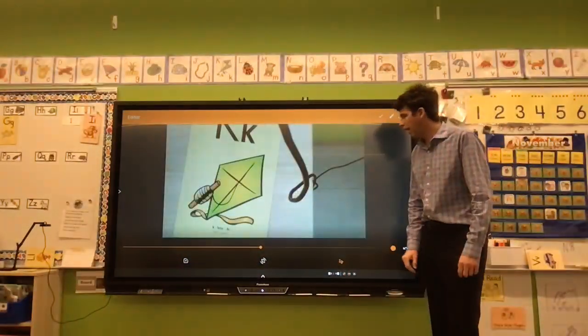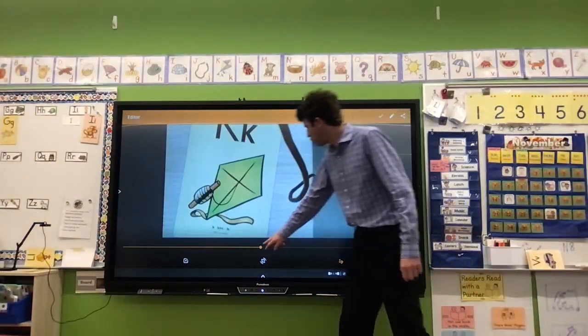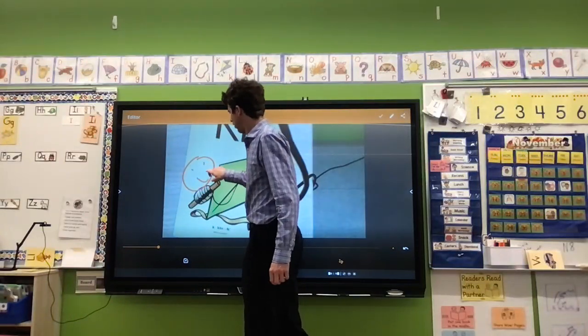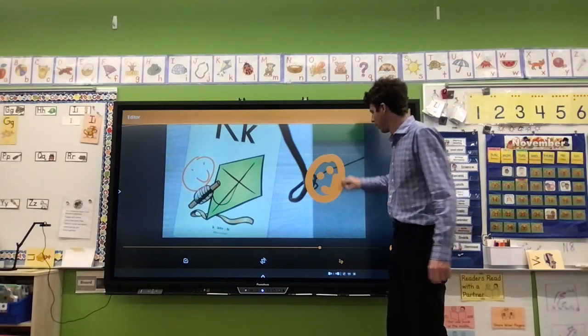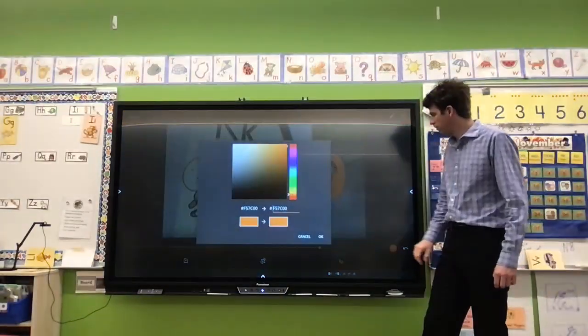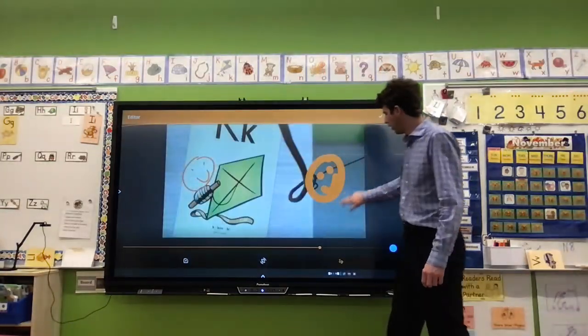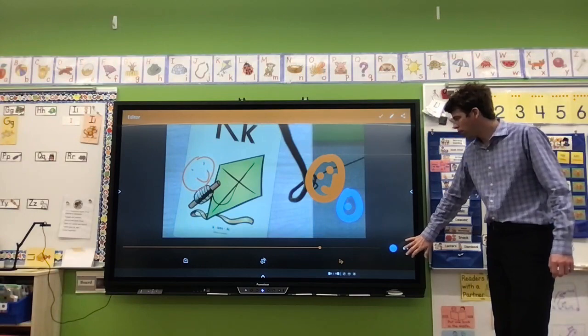And then over here this is the hey I want to write on the screen. So this is you can control how wide your pen is or pencil. And then you can change the color. So you can use this to change the color if you'd like. Okay and then this is the undo button.